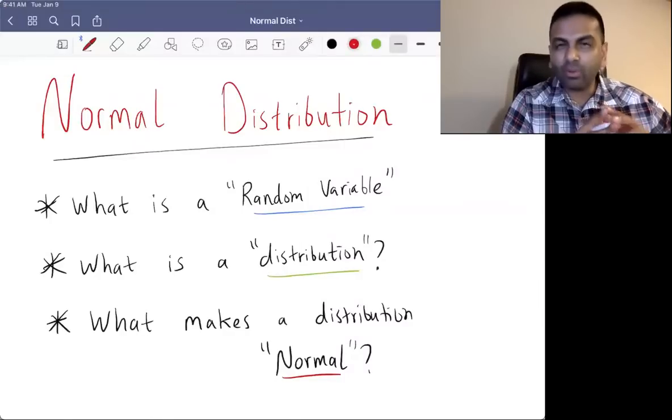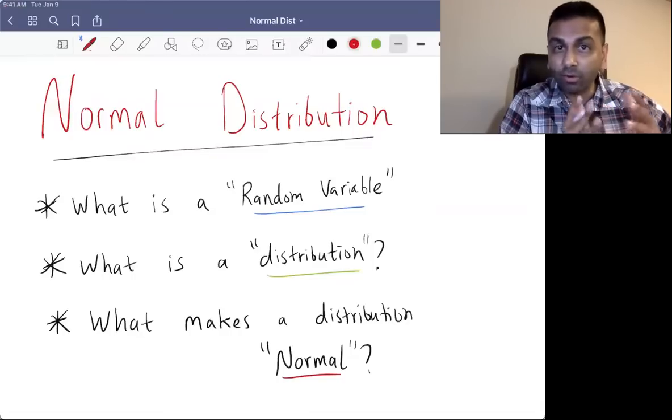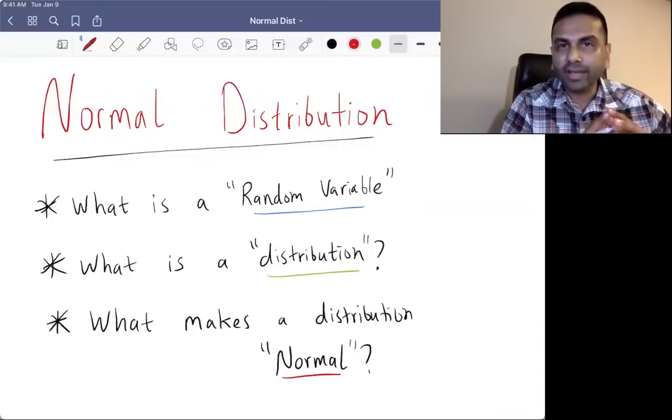In this video, we're going to talk about what a normal distribution is, but in the process, we're going to talk about more basic things as well, like what's a random variable, what is a distribution in general, and what is it about a distribution that would make it a normal distribution.